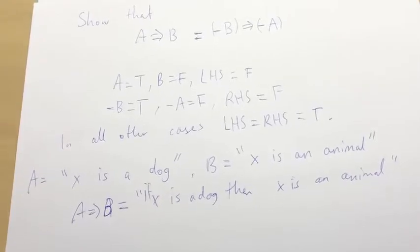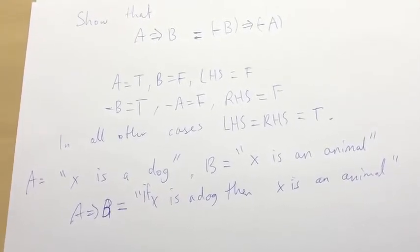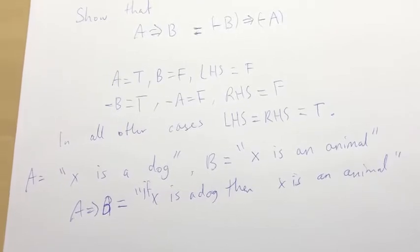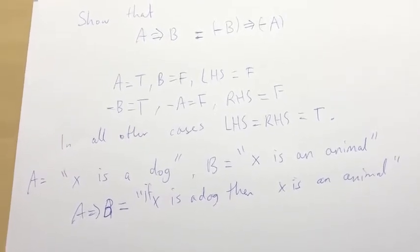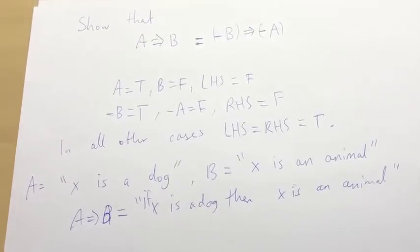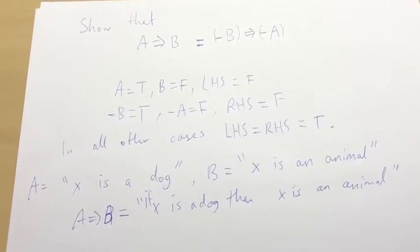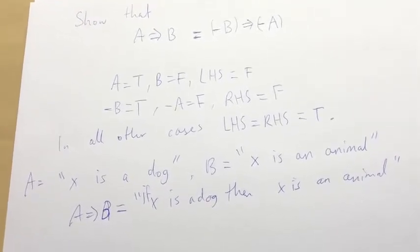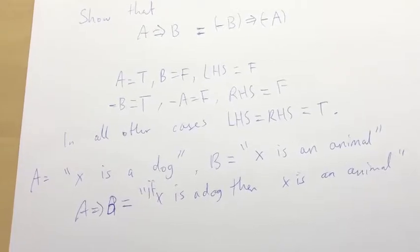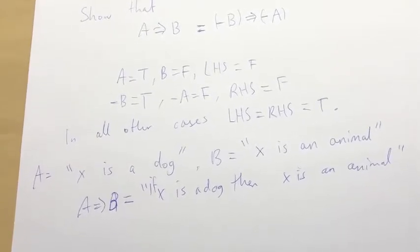Another way of saying that is, if X is not an animal, then X is not a dog. And that's true because, you know, if X were a dog, then X could not have not been an animal.